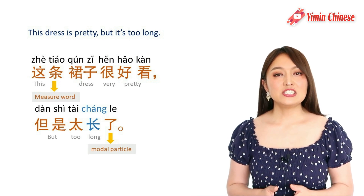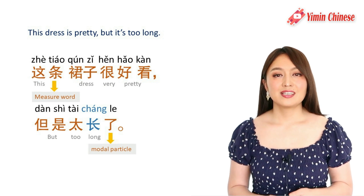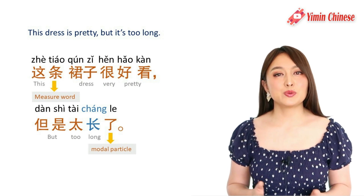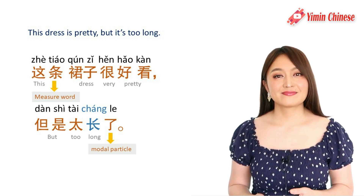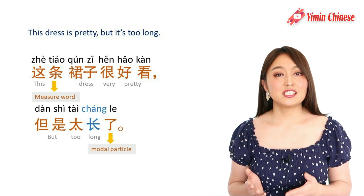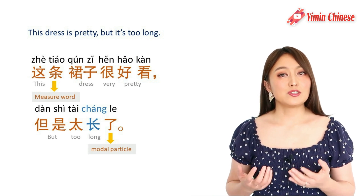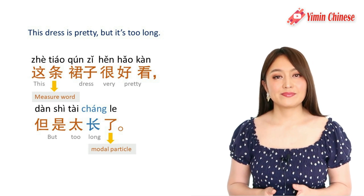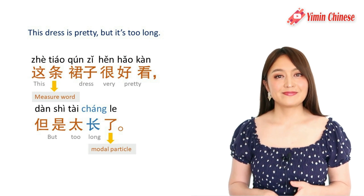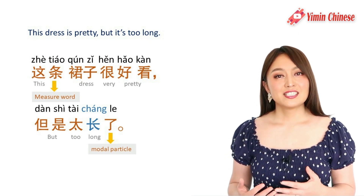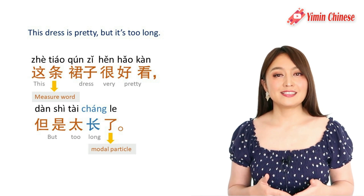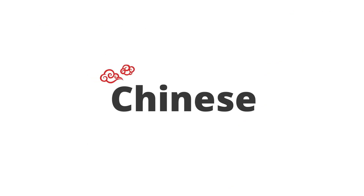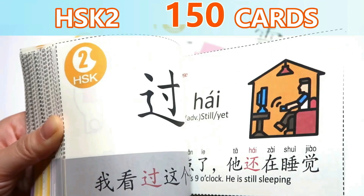For example: 这条裙子很好看，但是太长了 — This dress is very pretty, but it's too long. 条 is the measure word for long objects, so 这条裙子 likely refers to a dress, not a skirt. 这条裙子很好看，但是太长了.